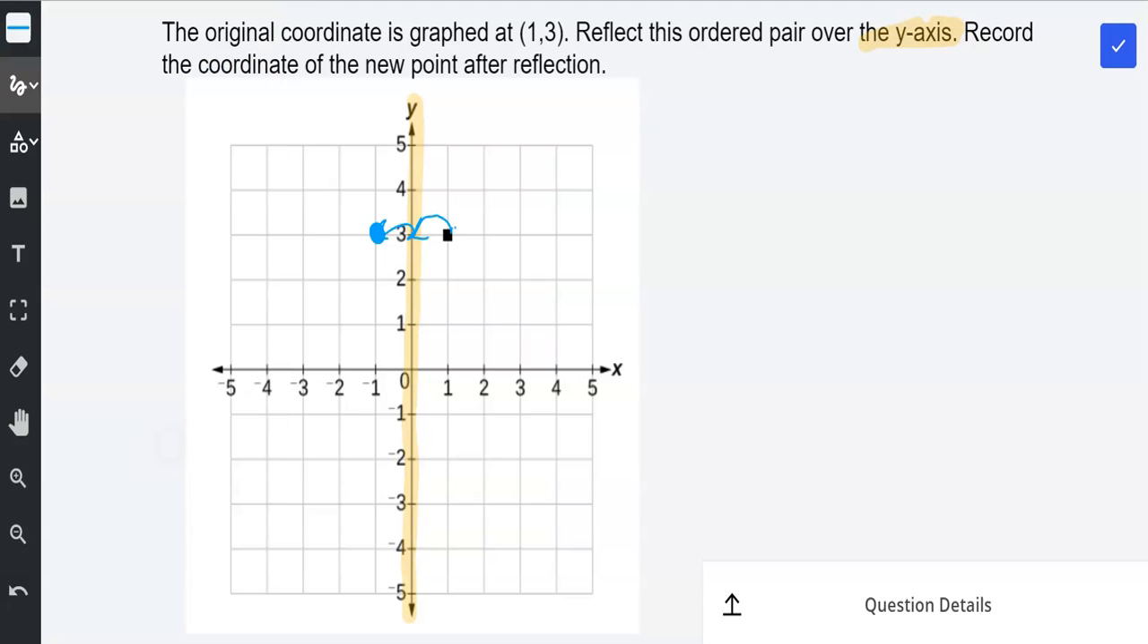And then I will go ahead and label this original point as C and the new point as C prime. Prime means new. And then this point is at negative 1, 3.